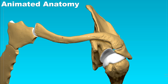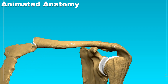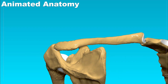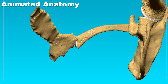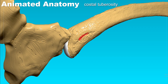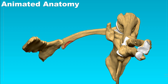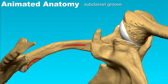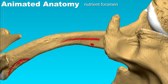On its upper surface it is pretty much smooth — there is not much to explain. If we look from down below, we can spot the costal tuberosity. We can also see the subclavian groove for the subclavius muscle, and here is the nutrient foramen.